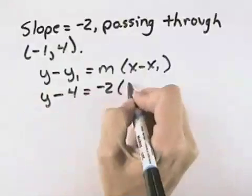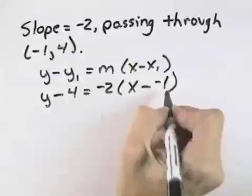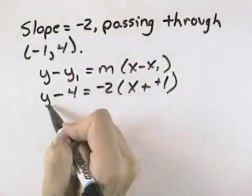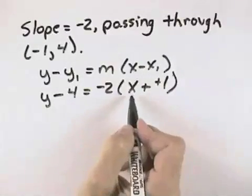Equals negative 2 times x minus the x value of our point, which is negative 1, and minus a negative becomes plus a positive. So that point-slope form of our line is y minus 4 equals negative 2 times the quantity x plus 1.